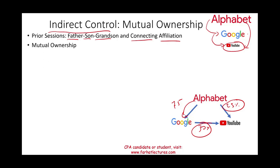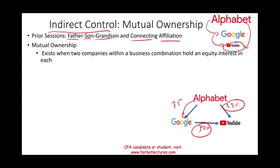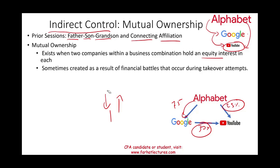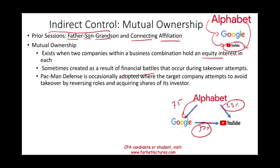In this session we're going to look at another form called mutual ownership. This exists when two companies in a business combination hold equity interests in each other — Company A holds shares in Company B, and Company B holds shares in Company A. This often happens as a result of financial battles during a takeover. The company being acquired starts buying shares in the acquiring company. This is called the Pac-Man defense, occasionally adopted when the target company attempts to avoid a takeover by reversing roles and acquiring shares of its acquirer.